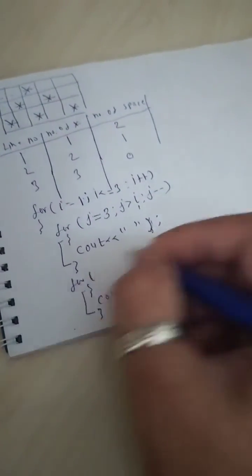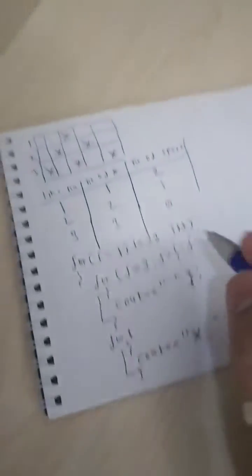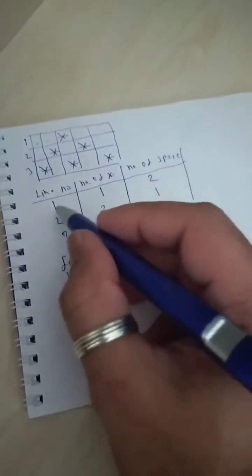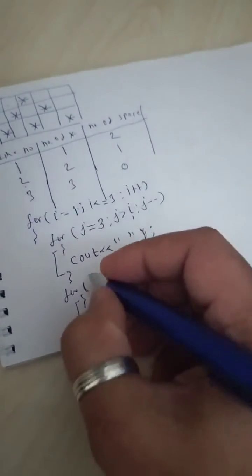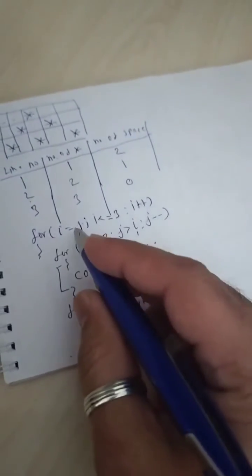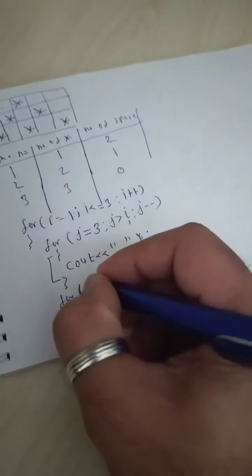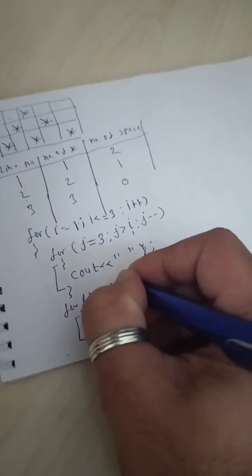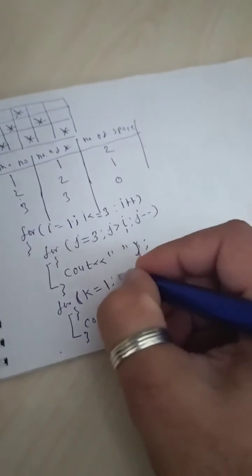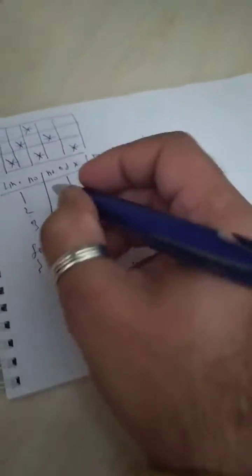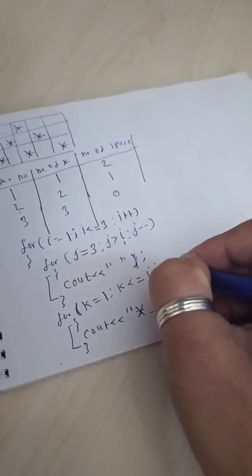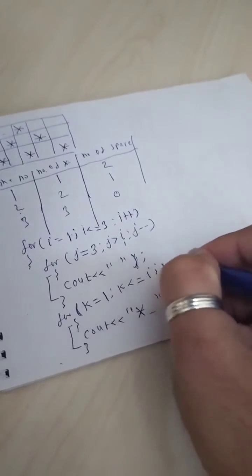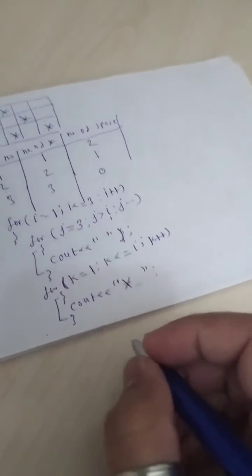The next loop is to print the number of stars. In line number one there is one star, line number two has two stars, and line number three has three stars. I will create another loop — the K loop — which initializes with one and K will go up to i. So: for k equals to 1, k less than or equal to i, k plus plus.